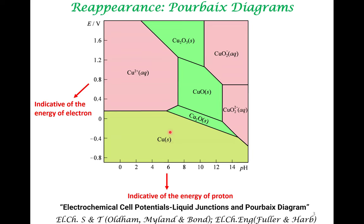In which form is copper present? Is it present as copper solid — the zero-valent form — or as divalent Cu²⁺ in aqueous conditions? This is when copper is corroded, or in the form of different oxides or oxidized copper anions in the aqueous solution. This is what we attempt to do in the Pourbaix diagram. Please look at that lecture to understand Pourbaix diagrams better. We will now look at the Pourbaix diagram in the context of corrosion.